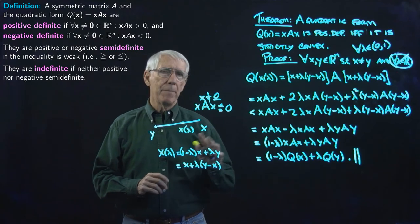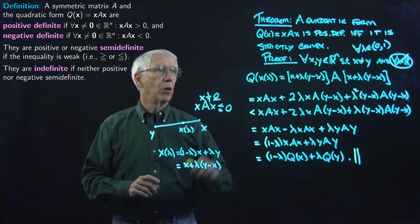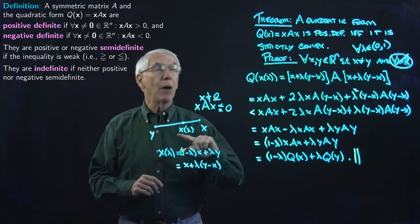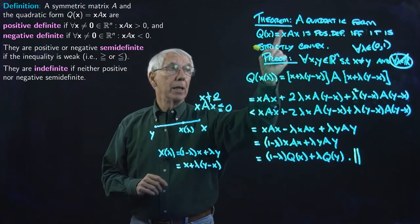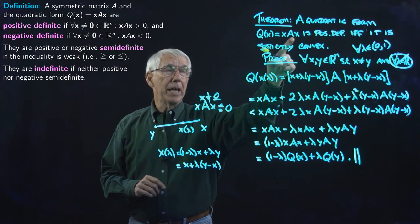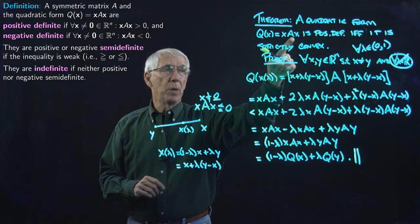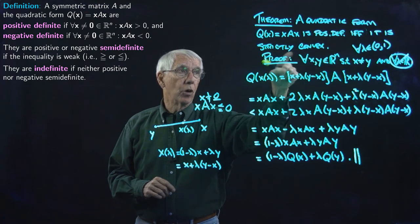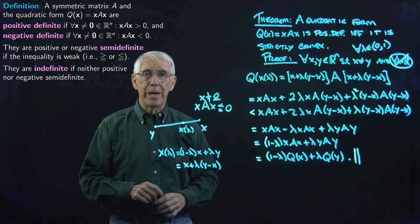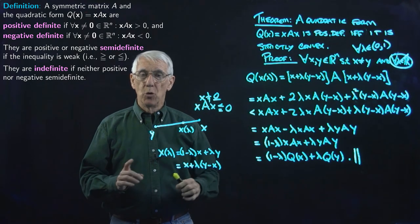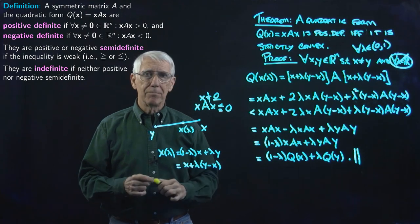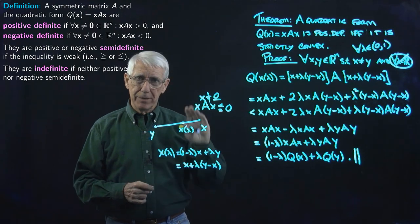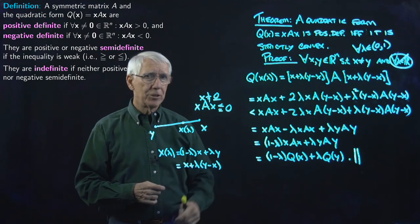That's it for this part of our quadratic forms lecture. Next time we're going to figure out what characteristics of the matrix A correspond to having a positive definite quadratic form — a strictly convex quadratic form. We'll do that next time. See you then.